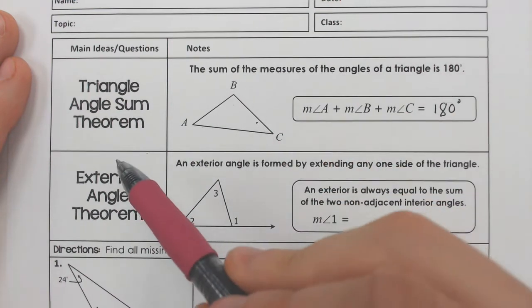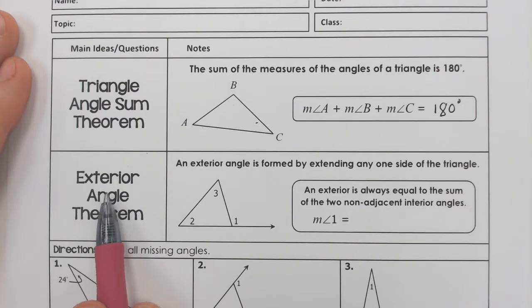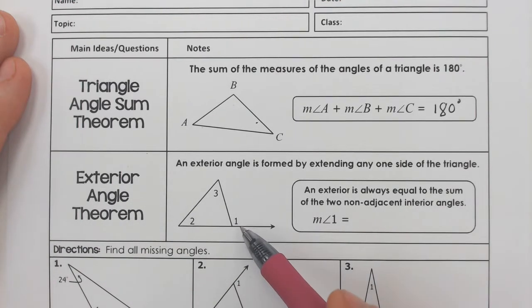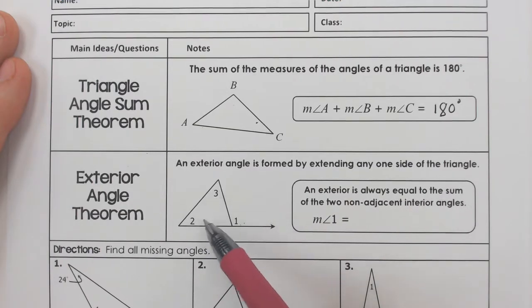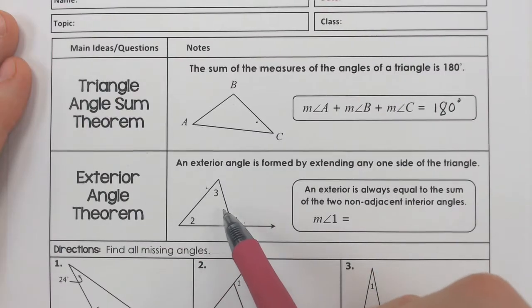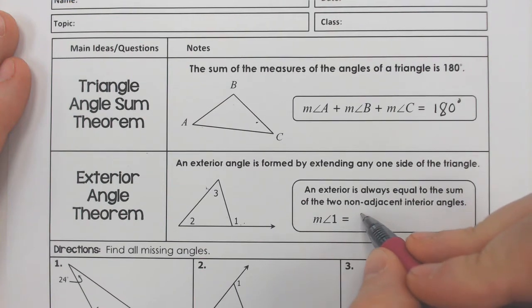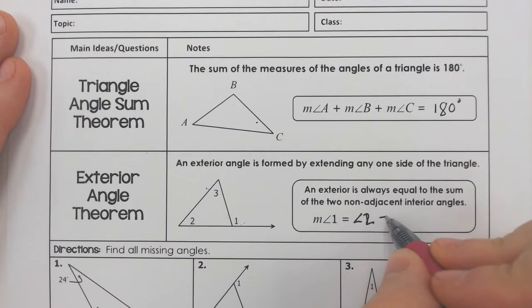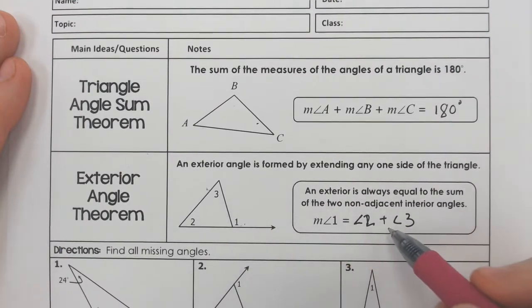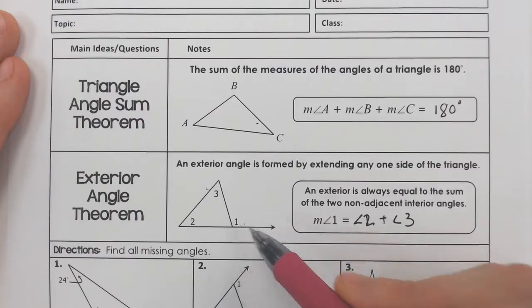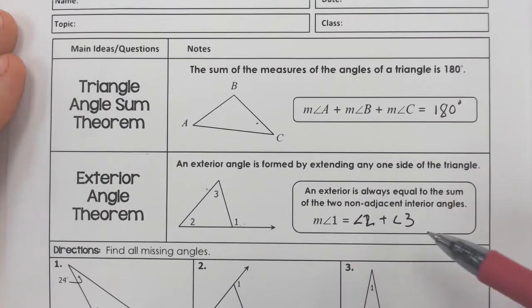And then there's this other theorem that is the exterior angle theorem. Now that one's a little different because this one angle, specifically angle one, is on the outside of the triangle. And if that is the case, then the two other angles that are not attached and hinged to angle one, the two angles on the opposite side of the triangle, those two angles will add to equal this one singular exterior angle. So that is the exterior angle theorem.